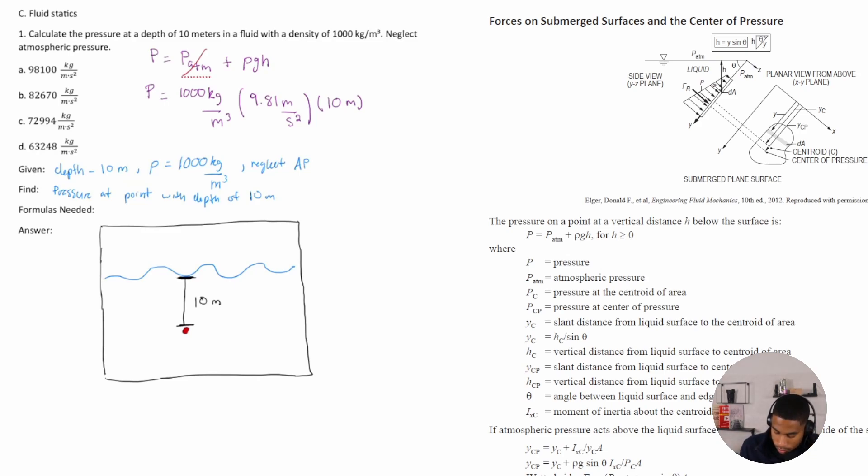Now, once we get our units, we get, or once we cancel our units, we get 98,100 kilograms over meters dot second squared. Okay. Or A.